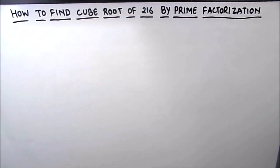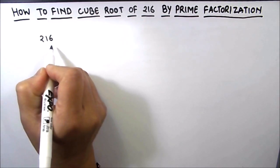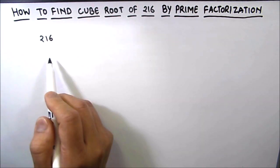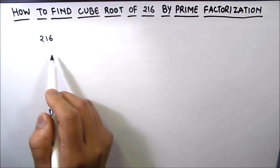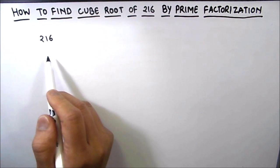Hello everyone, in this video we are going to learn how to find the cube root of 216 by using the prime factorization method. In this method, we divide the number by prime numbers and check whether it is a factor of that number or not. If it is a factor, then we write the number as the product of its prime factors.